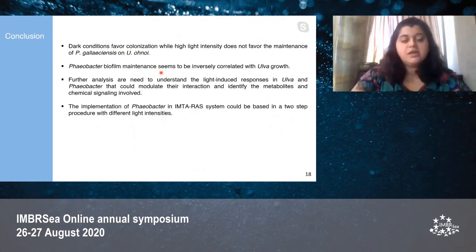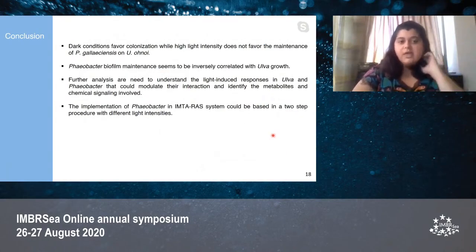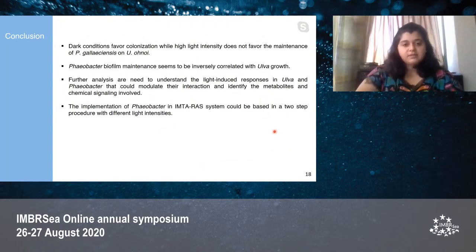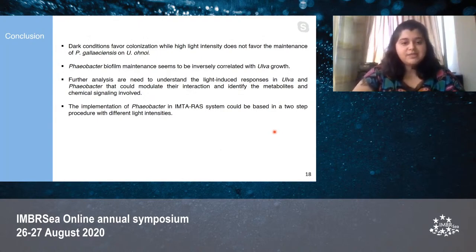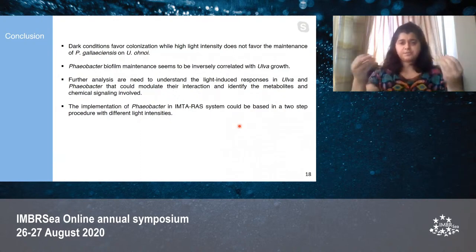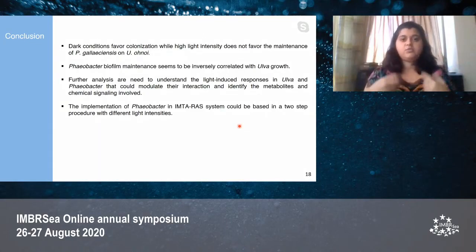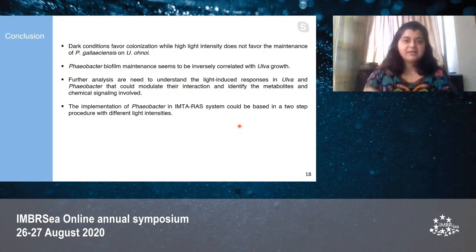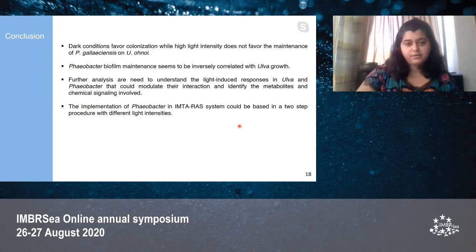In conclusion, dark conditions favor colonization while high light intensity does not favor the maintenance of Phaeobacter gallaeciensis on Ulva ohnoi. Phaeobacter biofilm maintenance seems to be inversely correlated with Ulva growth. Further analyses are needed to understand the light-induced responses in Ulva and Phaeobacter that could modulate their interaction and identify the metabolites and chemical signaling involved. The implementation of Phaeobacter in an IMTA-RAS system could be based on a two-step procedure with different light intensities: first culturing Ulva under dark conditions to establish the Phaeobacter biofilm and its probiotic effect, and then subjecting it to high light when ready to harvest Ulva ohnoi, allowing it to compensate for the delayed growth. Thank you.